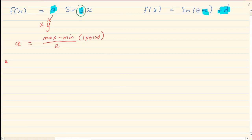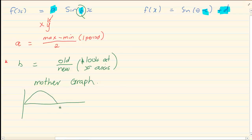How do we get B? To get B, you are going to say old over new. What it means is if you look at your x-axis and then you look at your mother graph. Your mother graph is the very first graph you did. If I look at my mother graph, if I take a sin graph, that original point is 180 degrees. That is considered an old point.